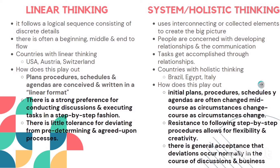Now, types of thinking. There are two types: linear thinking and systematic or holistic thinking. Linear thinking follows a logical sequence of discrete details — a proper flow with a beginning, middle, and end. Countries that follow this include the USA, Australia, and Switzerland. Plans, procedures, schedules, and agendas are discussed before meetings and followed in a written linear format.